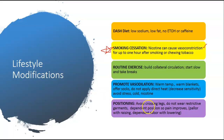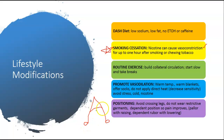Positioning: avoid crossing legs. It's all about keeping those arteries open as much as possible. Do not wear restrictive garments. Use a dependent position — pain improves. Remember the arterial positioning concept to help with blood flow. The patient will see pallor when raising the leg and dependent rubor when lowering it.